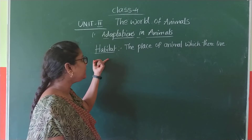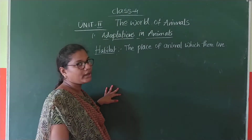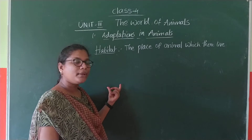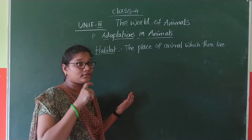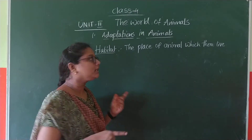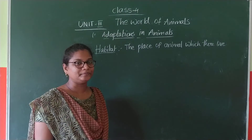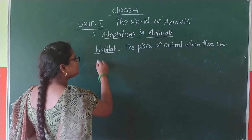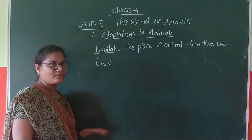They have a special feature — so we call this the adaptation process. For example, we have a lion. The lion lives in the forest. Some animals live on land, like a cow or a buffalo.